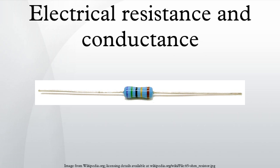For a wide variety of materials and conditions, V and I are directly proportional to each other, and therefore R and G are constant. This proportionality is called Ohm's law, and materials that satisfy it are called ohmic materials. In other cases, such as a diode or battery, V and I are not directly proportional, or in other words the I–V curve is not a straight line through the origin, and Ohm's law does not hold.